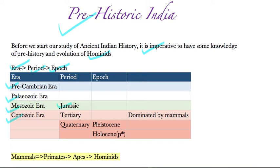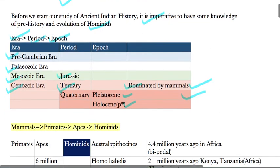The Cenozoic era contains the Tertiary period and the Quaternary period. In the Tertiary period, after the Jurassic age, the dinosaurs disappeared and mammals dominated the earth — initially very huge in size. In the Quaternary era, the size of mammals decreased. The Quaternary era is further divided into epochs: the Pleistocene epoch, in which most hominid development occurred, and the Holocene epoch, which is the present day.